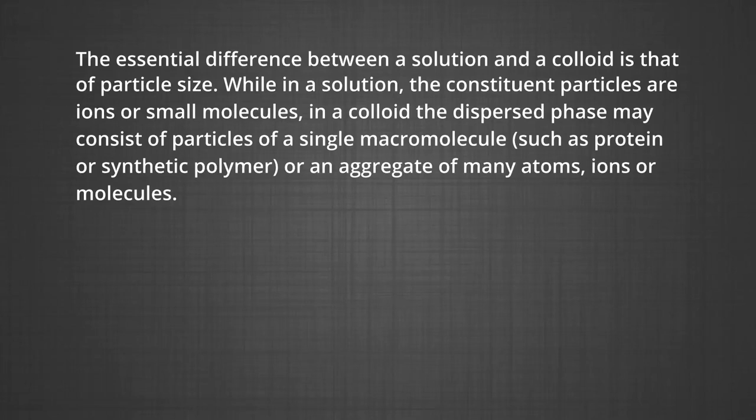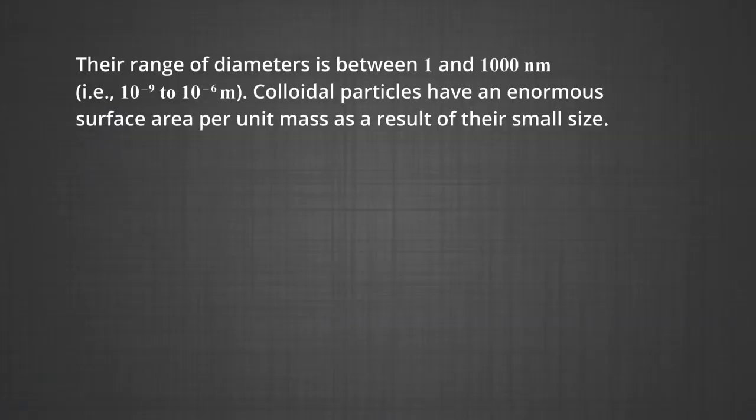A detailed investigation revealed that a substance behaves as a crystalloid or colloid depending upon its particle size. The essential difference between a solution and a colloid is that of particle size. While in solution the constituent particles or ions are small molecules, in a colloid the dispersed phase may consist of particles of a single macromolecule, such as protein or synthetic polymer, or an aggregate of many atoms, ions, or molecules. Colloidal particles are larger than simple molecules but small enough to remain suspended. The range of diameters is between 1 and 1000 nanometers, that is 10⁻⁹ to 10⁻⁶ meters.